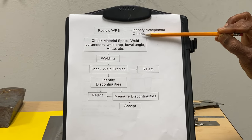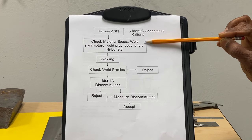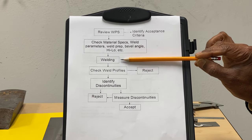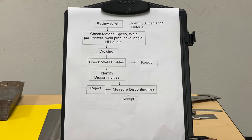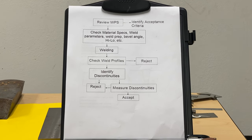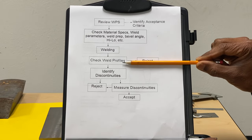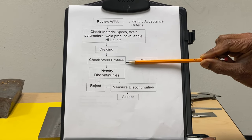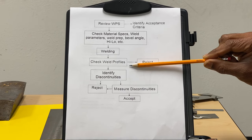Then we take measurements — the bevel angle — to make sure they are acceptable before starting the welding. Then the welding begins, and after the welding is done, we check for the weld profile, which is basically the reinforcement of the weld, and to make sure there is no misalignment during the welding process. Once the profiles have been checked, for the fillet weld we check for the leg size and also check if the throat is sufficient, or if there is an insufficient throat for concave welds.